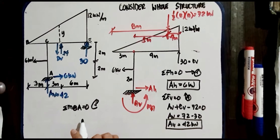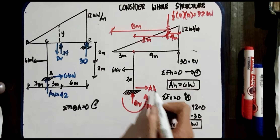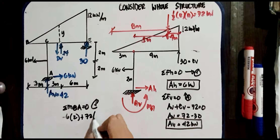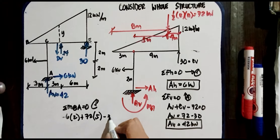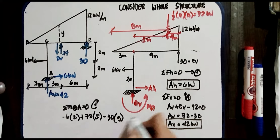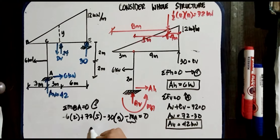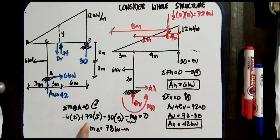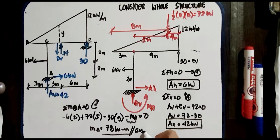For summation of moment at A equal to 0, clockwise positive: −6×2 + 72×5 − 30×9 − MA = 0. Transposing: MA = −12 + 360 − 270 = 78 kN·m. So MA = 78 kN·m.